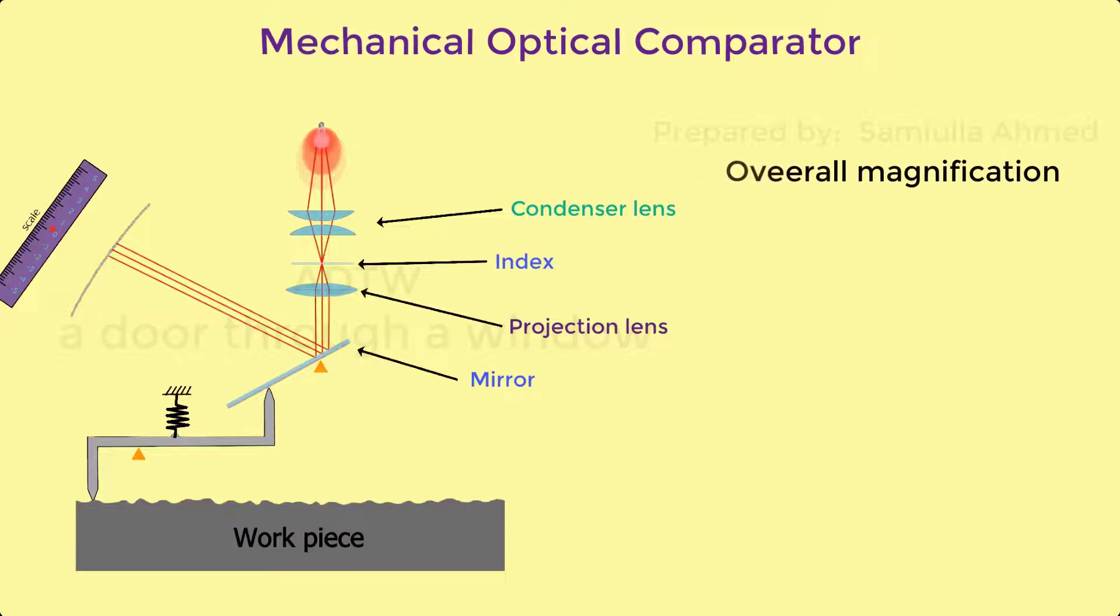Thus, overall magnification of the system is equal to optical magnification into mechanical magnification, which is equal to 2 into L4 by L3 into L2 by L1. This is how mechanical optical comparator works.